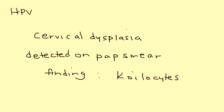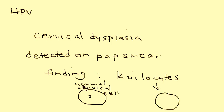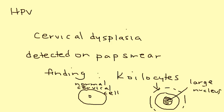A very important characteristic finding is that you will see cells known as koilocytes. To illustrate: here's a normal cervical cell, and a koilocyte will have a very large nucleus surrounded by a halo. That is essentially a sign of cervical dysplasia caused by HPV.